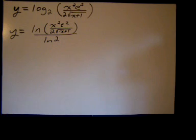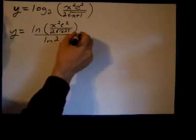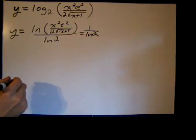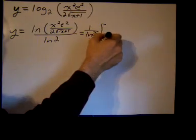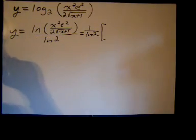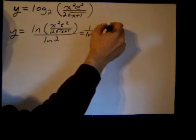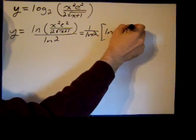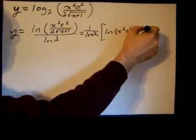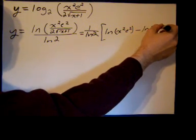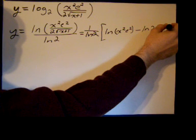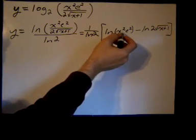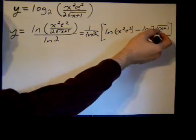So now we can pull out that one over. I'm just going to do this laterally here and make it a product of the numerator, and I can split up the numerator into the ln of x squared e squared minus the ln of two square roots of x plus one. Now I can break this product up and I can break this product up.